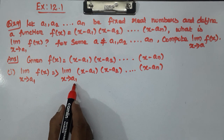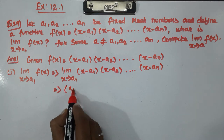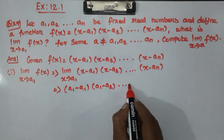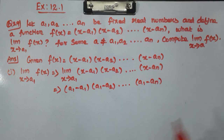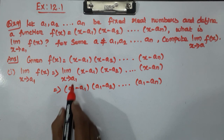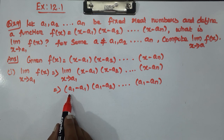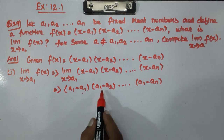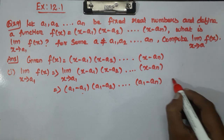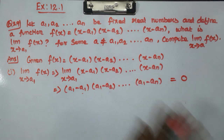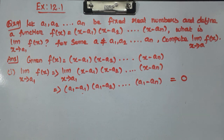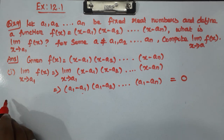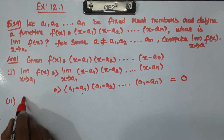Apply the limit. First, apply the first term: a1 minus a1 gives 0. So the answer is 0. The first question's answer is done.